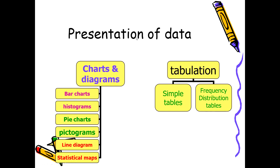For presentation of data, the researcher can make tables, charts, and diagrams. Tables can be simple tables or frequency distribution tables. For charts and diagrams, there is a lot of variety: bar charts, histograms, pie charts, pictograms, line diagrams, statistical maps, and more. These charts and diagrams are specifically applied to specific types of data, which we will discuss in subsequent slides.